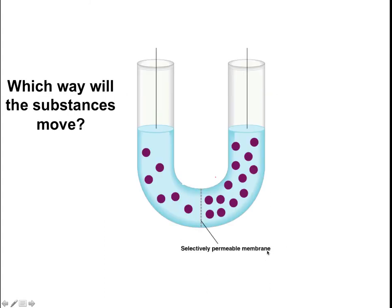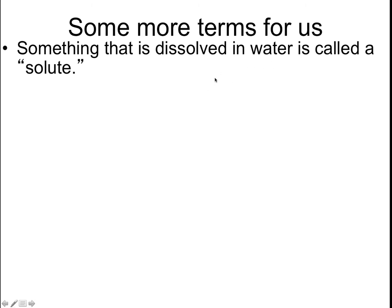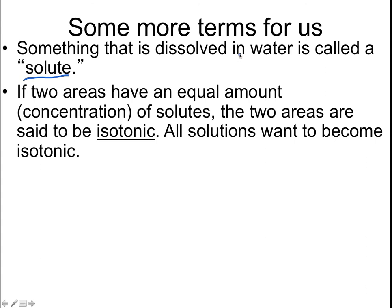So which way will the substances move? Here we have a high concentration, here we have a low concentration, so the molecules will be moving from right to left. Now, something I mentioned before is this thing called a solute. A solute is something that is dissolved in water — similar to when you dissolve sugar in water, the sugar would be a solute. If two areas have an equal concentration of solute, the two areas are said to be isotonic, 'iso' meaning the same. All solutions want to become isotonic.